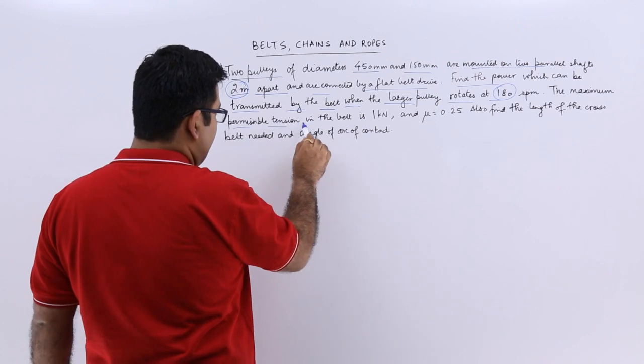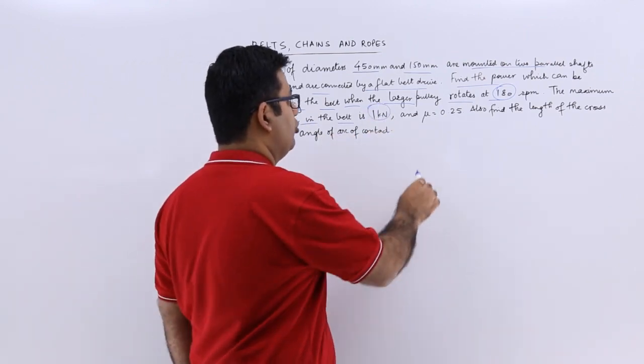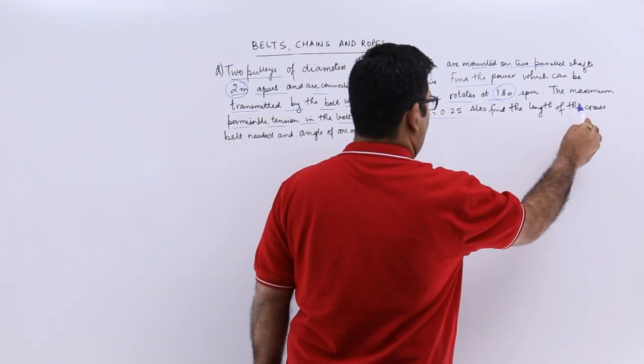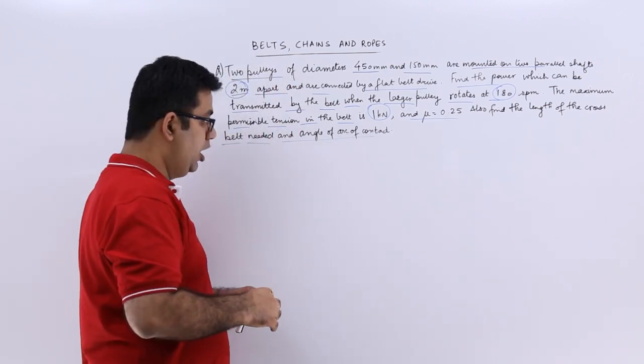The maximum permissible tension in the belt is 1000 N and the friction coefficient is 0.25. Also find the length of the cross belt needed and the angle of arc of contact.